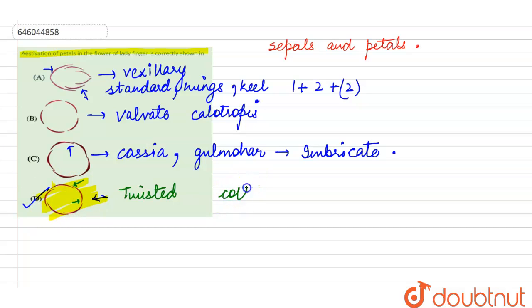The other examples of this, along with lady finger, will be cotton as well as china rose. So these are the three important examples of this type while we can mark option number 4 as the right answer for this question.